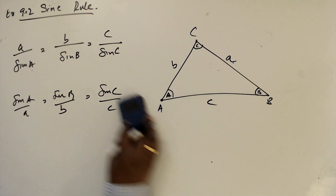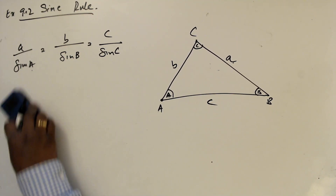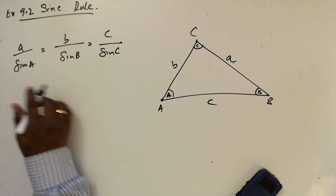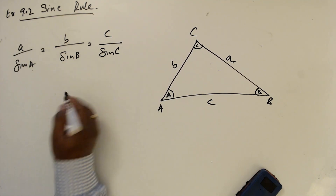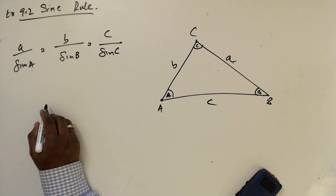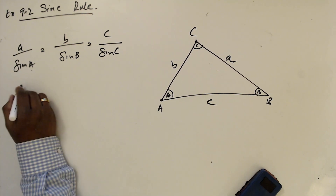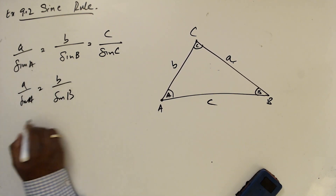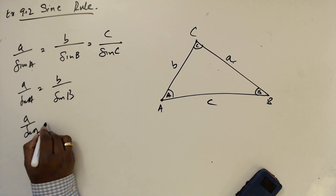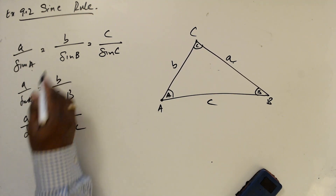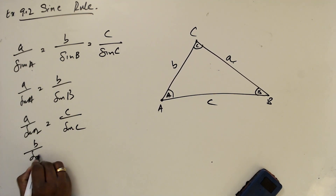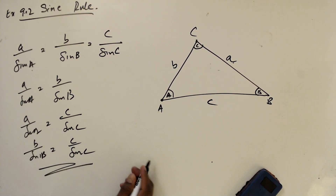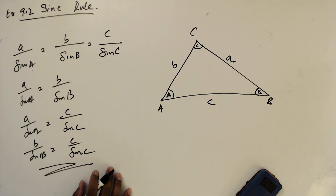Now, how many equations are there? We can write: a over sine A equals b over sine B; or a over sine A equals c over sine C; or b over sine B equals c over sine C. We can write it as three pairwise equations like this.